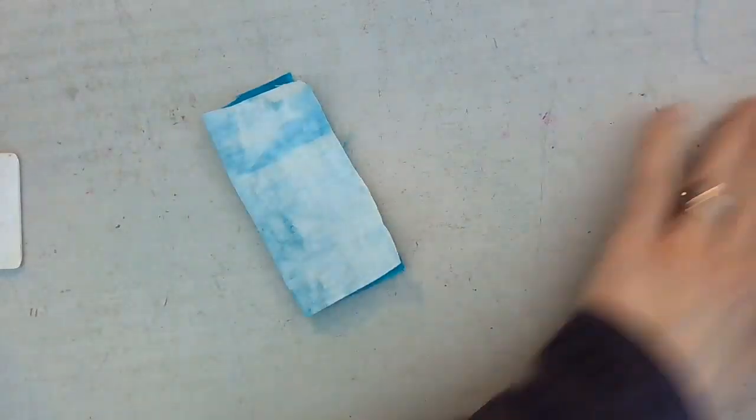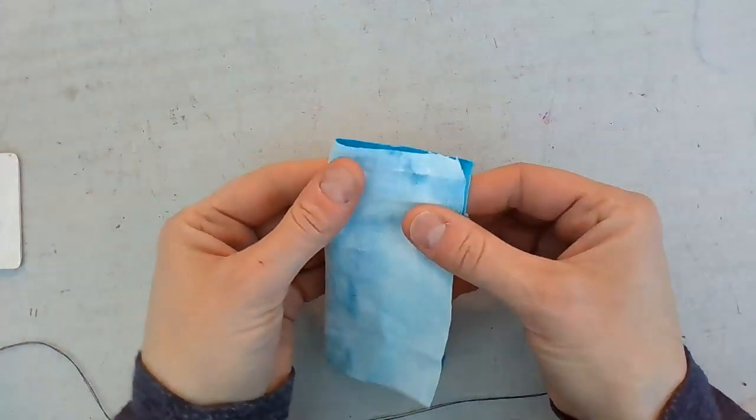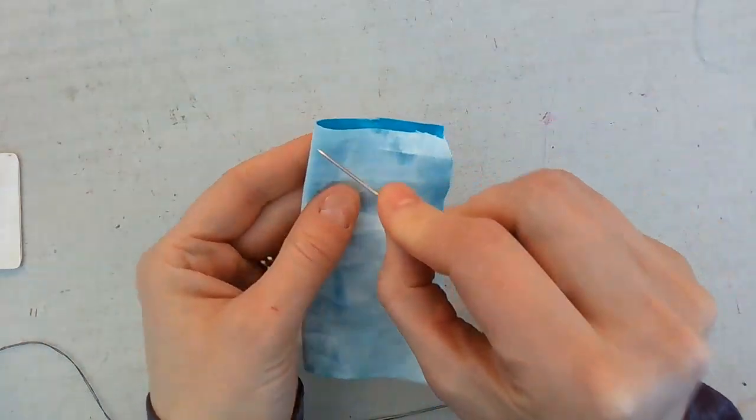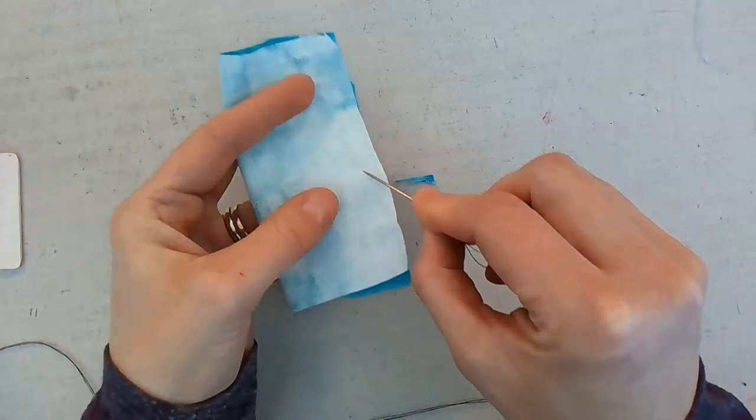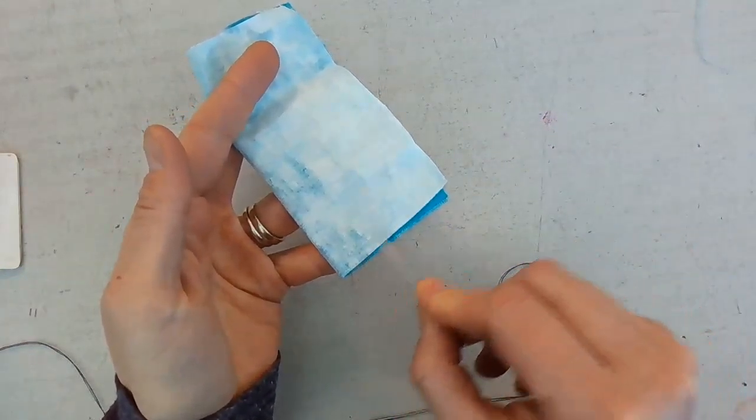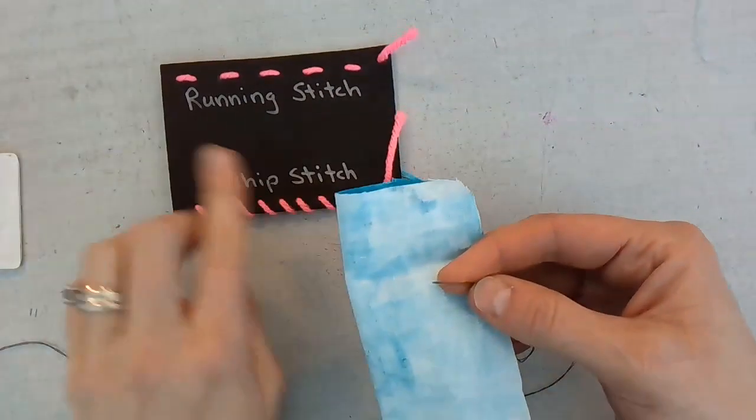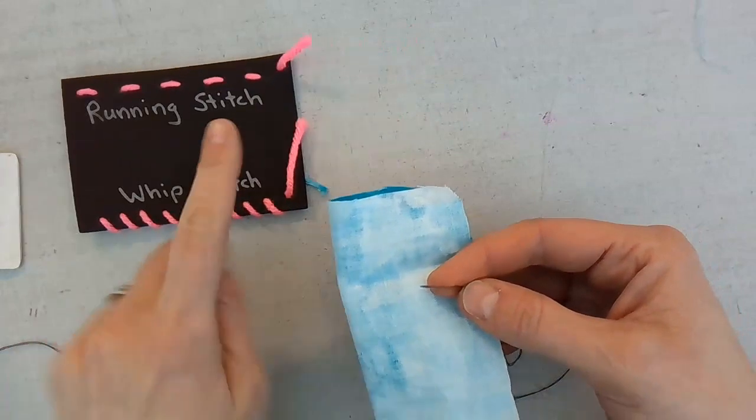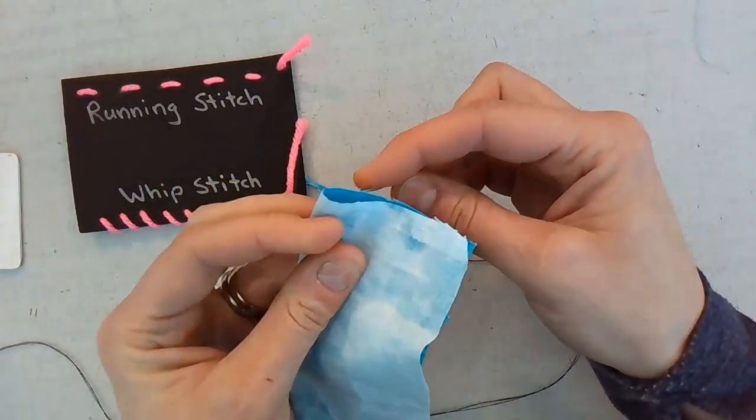And you're going to start sewing right in this one corner and then you're going to work your way all the way around. You're going to stop about halfway. You need to leave an opening so that you can put some stuffing in there to make it a fluffy pillow. You really need to use the running stitch with this type of project, not the whip stitch.